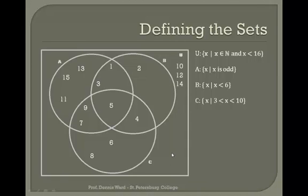There's no real reason you couldn't put those items in any empty space outside the circles — this is just stereotypically where we put them. You could also have a situation where someone asks where 31 goes. Well, 31 is going to go outside our universe since it's not less than 16. Typically this isn't something you discuss, but that's where it goes if it comes up.